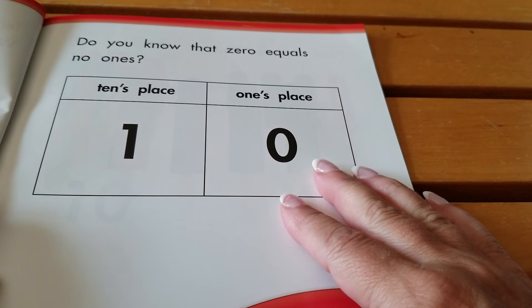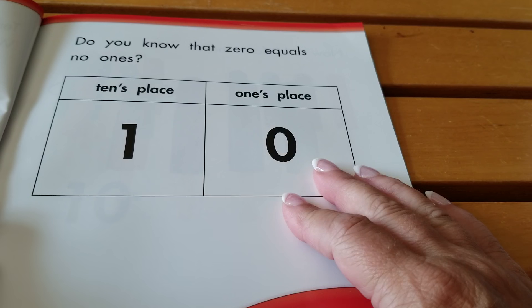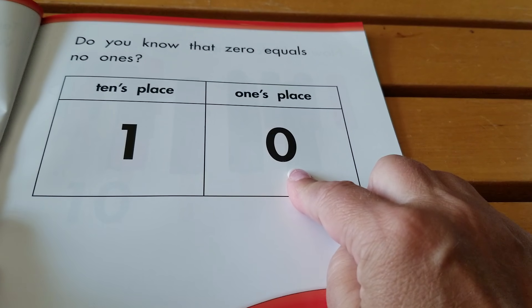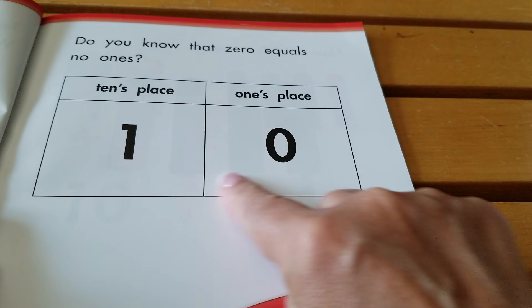Did you know that zero equals no ones? So, one in the tens place, zero in the ones place gives me ten.